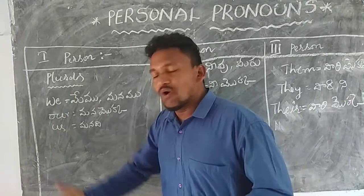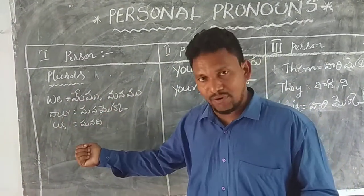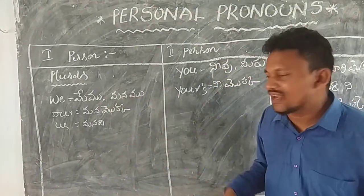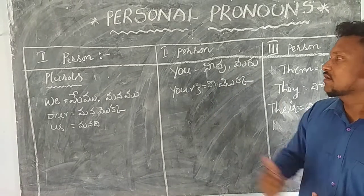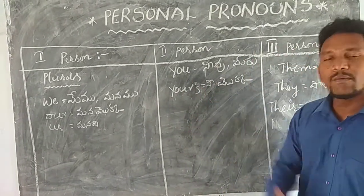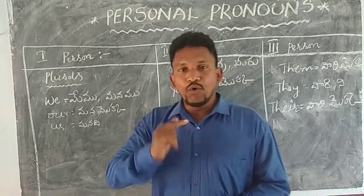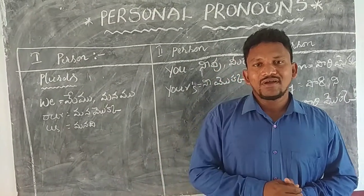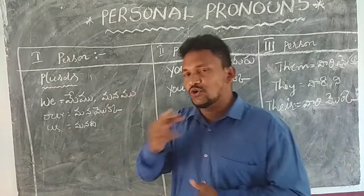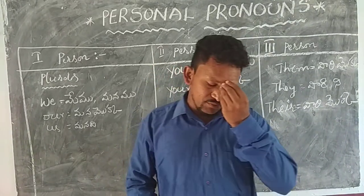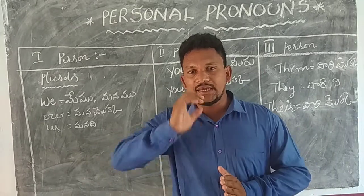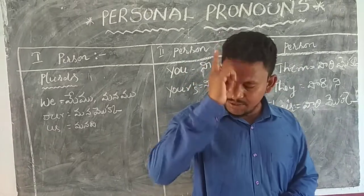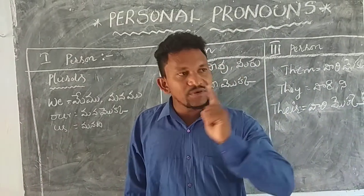These words we use only in the plural for the second person. Now, 'you' — we have two types of use. Number one, you can use 'you' for a singular, and the same word you can use for plural. When you are speaking with a single person, it means you are talking with one person. You are talking with just that one person.